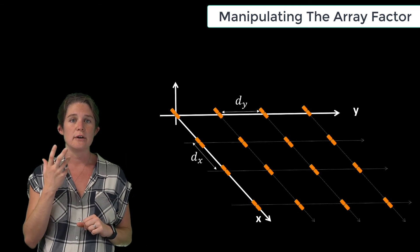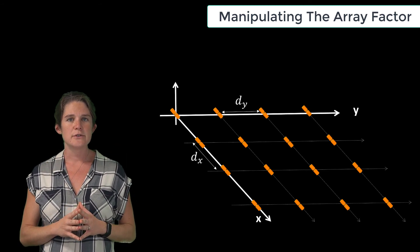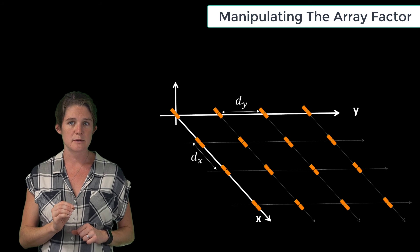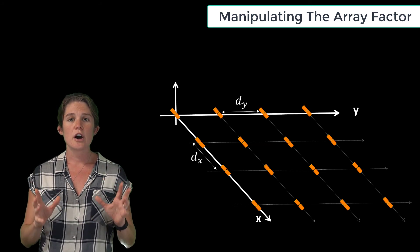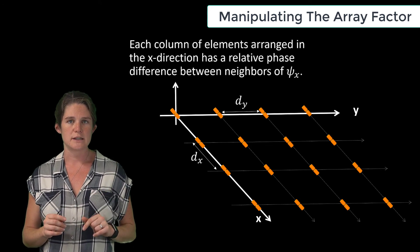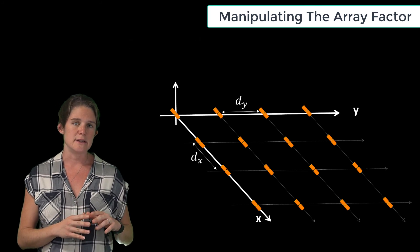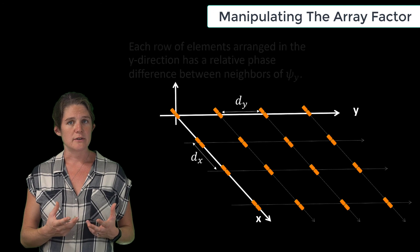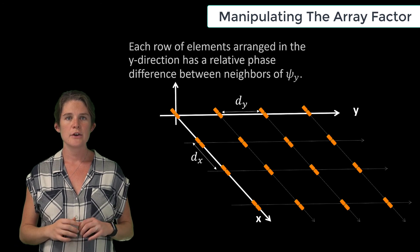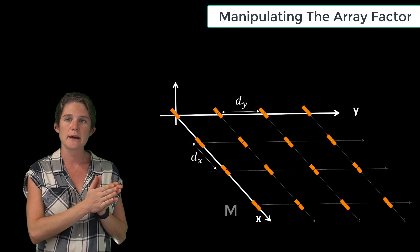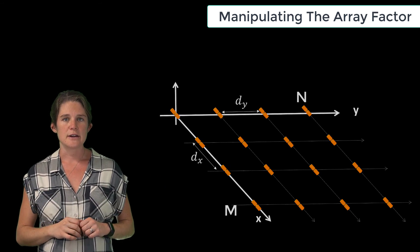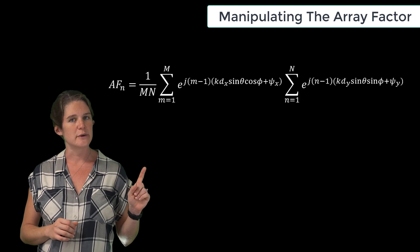It is also possible to construct a planar array, in which the radiating elements are arranged along two dimensions. This may be used to enable steering around a second axis. The x-directed spacing between elements is d sub x, and each column of elements arranged in the x-direction has a relative phase difference between neighbors of phi sub x. Similarly, the y-directed spacing between elements is d sub y, and each row of elements arranged in the y-direction has a relative phase difference between neighbors of phi sub y. For an m by n array, with a grid of m elements in the x-direction by n elements in the y-direction, the normalized array factor is given by this equation, which may also be written in an alternative form.